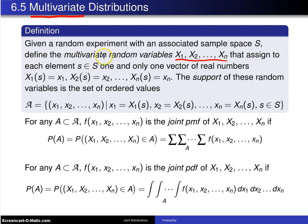The multivariate random variables X₁ up to Xₙ assign each element s which is an element of the sample space one and only one vector of real numbers: X₁(s) equals little x₁, X₂(s) equals little x₂, up to Xₙ(s) equals little xₙ.